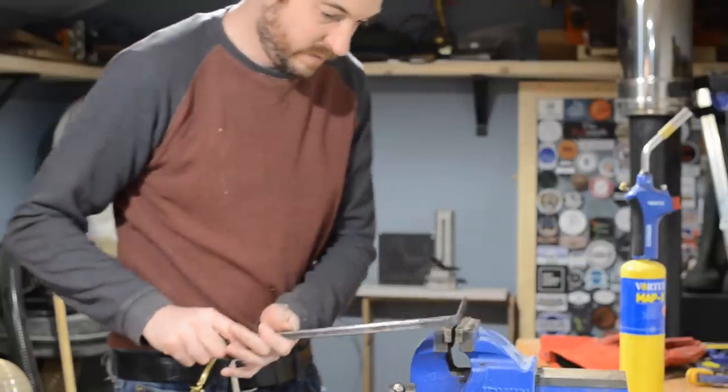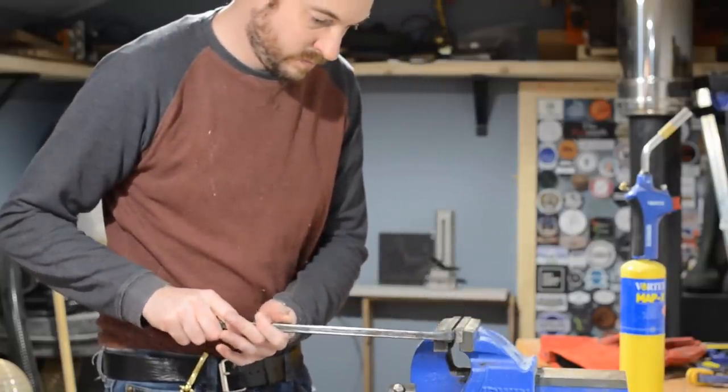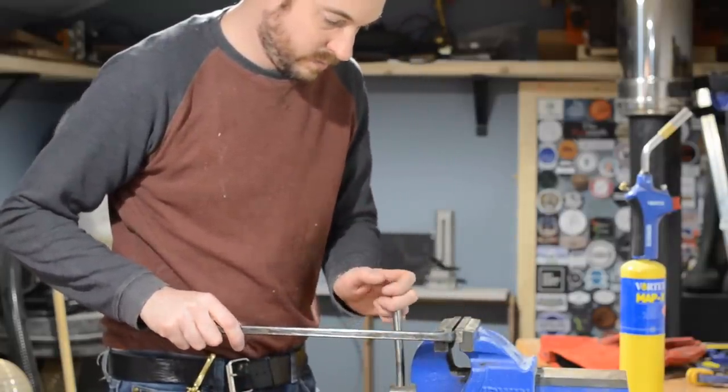I now rearranged the bar in the vise so the short bit was in the jaws and then I could get the blowtorch back on and heating up again.